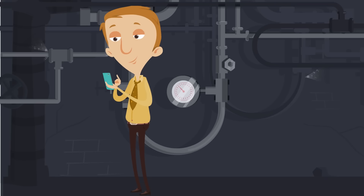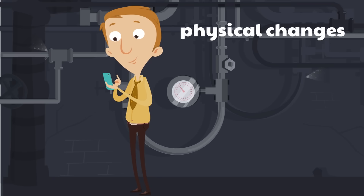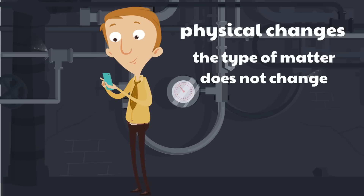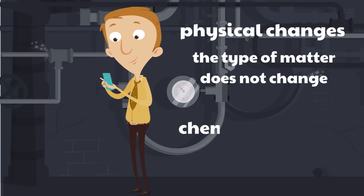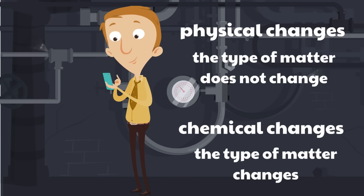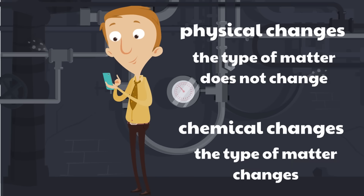That's all for our lesson today. We see matter every day — the Earth is full of stuff, and it's called matter. There are changes that happen: physical changes, which are changes that don't change the type of matter, and then chemical changes, which are changes so significant they actually change the type of matter. Physical and chemical changes — thanks for watching, and we hope to see you next time.